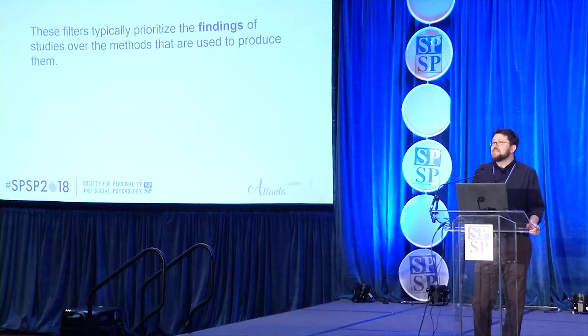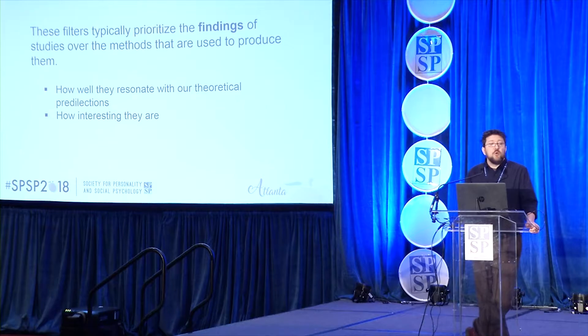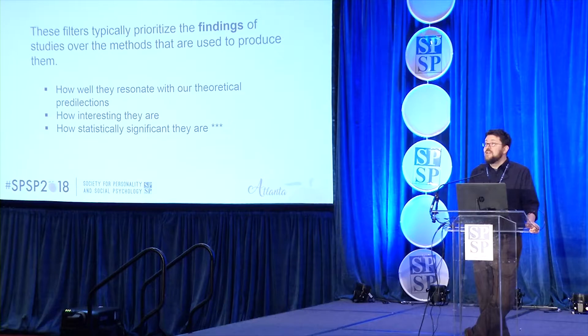This creates a situation where the published literature is more or less a selection of findings that resonate well with our theoretical predilections and preferences. It consists of findings filtered on the basis of how interesting or counterintuitive they may be, and of course findings selected on the basis of how statistically significant they are.